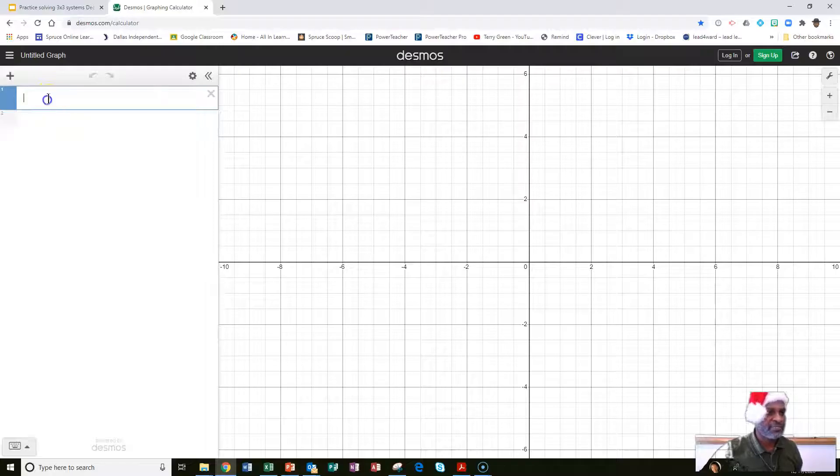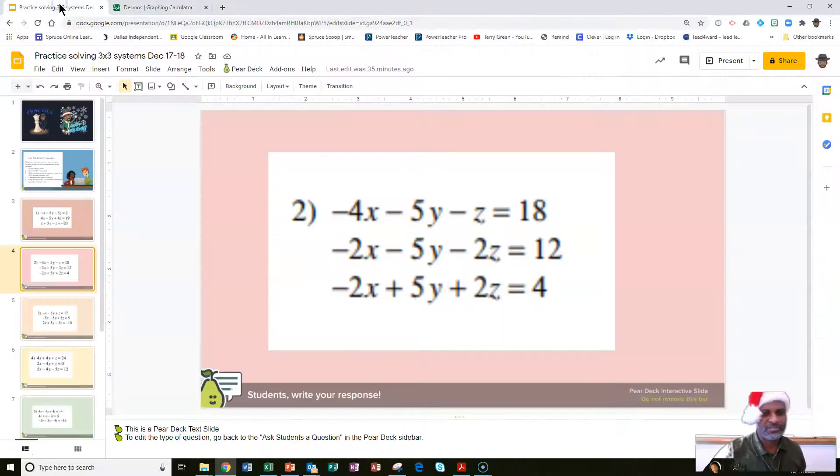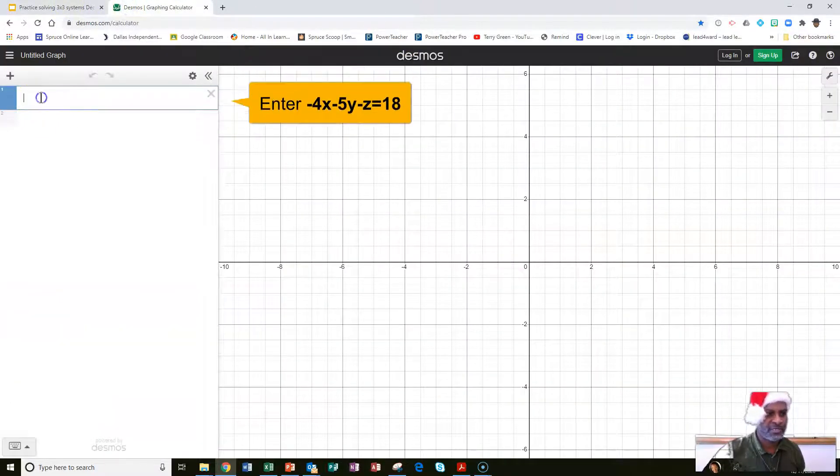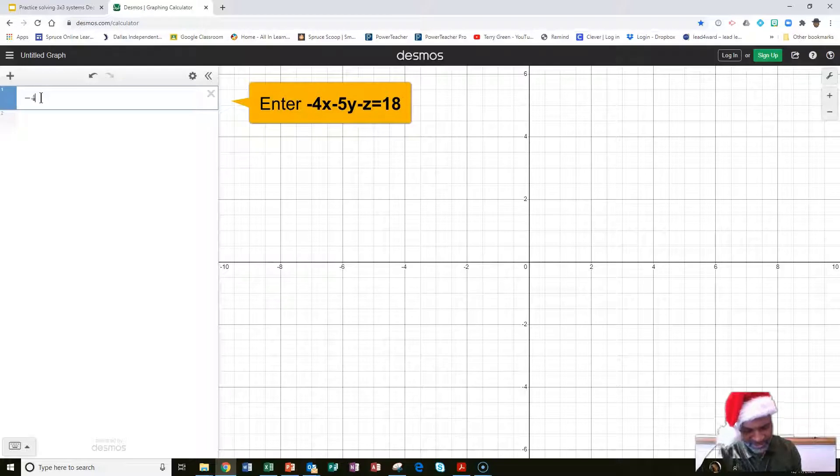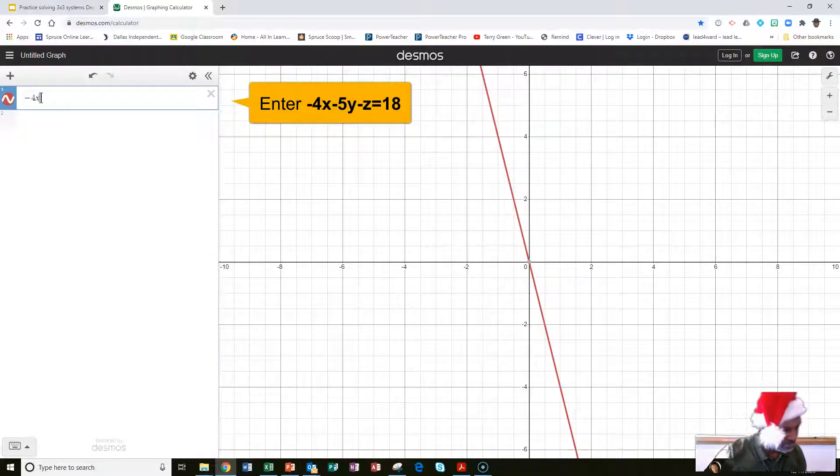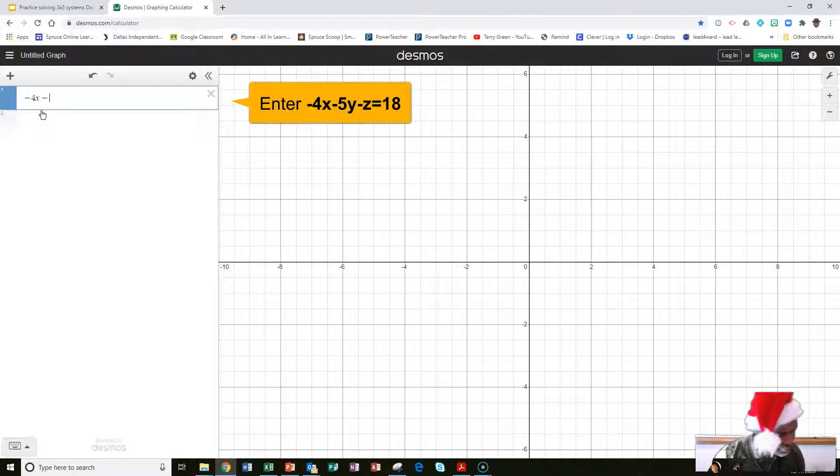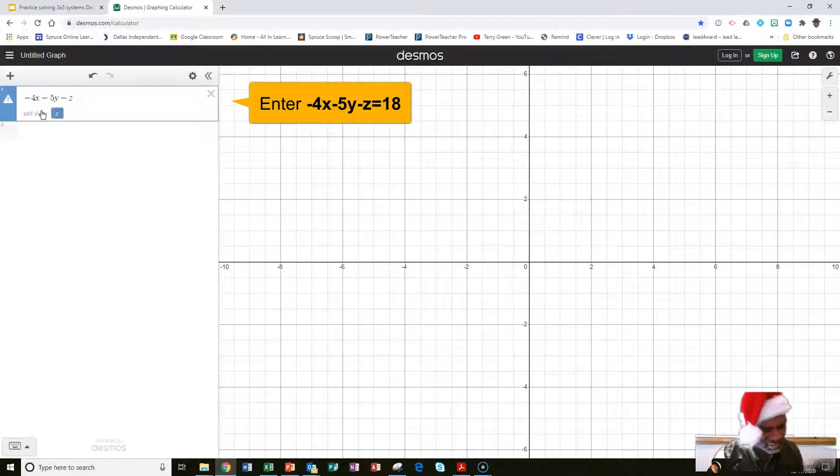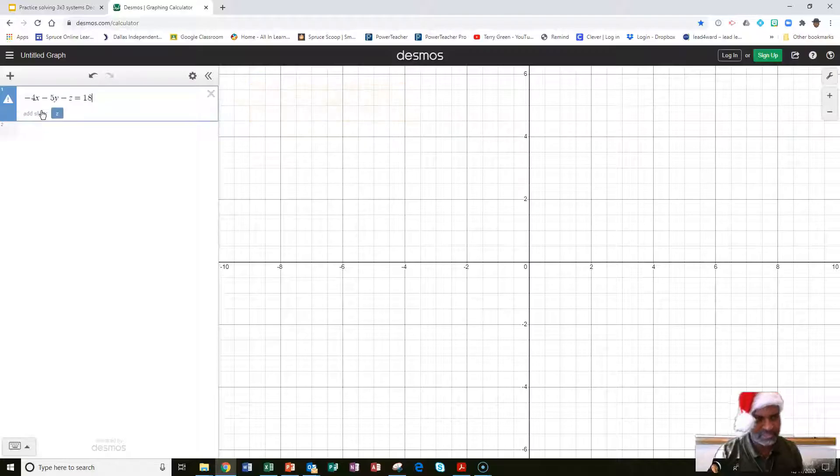First step, let's type out three equations. What are three equations? These ones right here. So, let's type negative 4x. I'm just going to use my keyboard here. Minus 5y minus z equals 18.